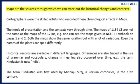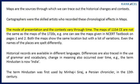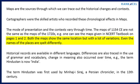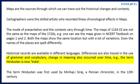Maps are the sources through which we can trace historical changes and contexts. Cartographers were skilled artists who recorded these chronological effects in maps. The mode of presentation and contexts vary through time — the maps of 1154 CE are not the same as the maps of the 1720s. Both maps show the same location but with many variations; even the names of places are spelled differently. Historical records are available in different languages, with differences also traced in grammar and vocabulary.